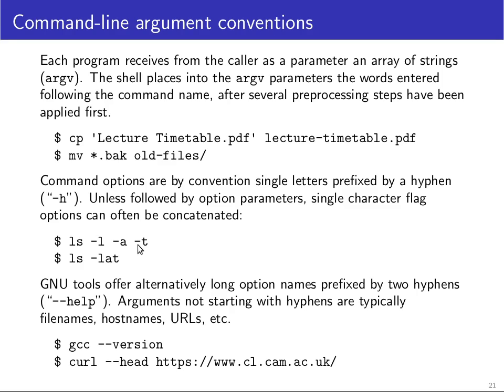Minus t sorts the files not by file name but by their last modified date. A common abbreviation supported by many applications is that if you have these single-letter options and the option doesn't have any additional file name or other extension following it, you can contract them together by just writing minus followed by all the letters of the individual options, such as minus lat.